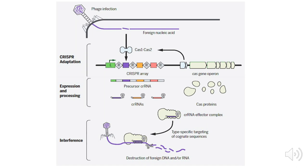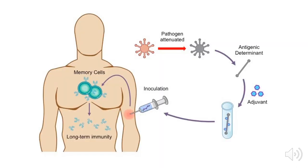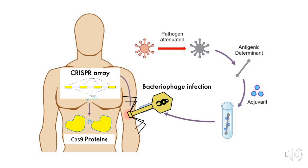When the bacteriophage tries to infect the cell again, the cell transcribes CRISPR RNA, or crRNA, from the aforementioned spacer sequences, which guide Cas proteins to destroy the viral DNA. Continuing the vaccine analogy, the crRNA guiding the Cas proteins to the viral DNA is the bacterial equivalent to how B cells activated by antigens commit the antigen to memory before destroying the pathogen with antibodies.